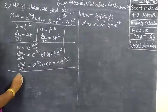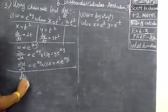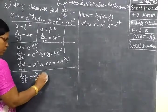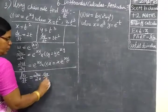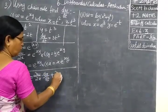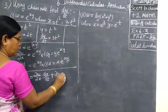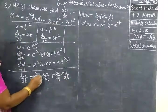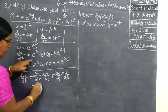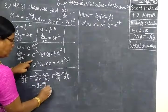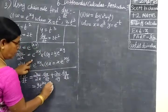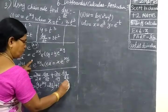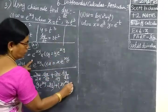Now we are finding the chain rule. dw by dt equal to first: ∂w by ∂x into dx by dt plus ∂w by ∂y into dy by dt. So this is equal to y into e power xy into dx by dt, which is 2t, plus x into e power xy into 3t square.